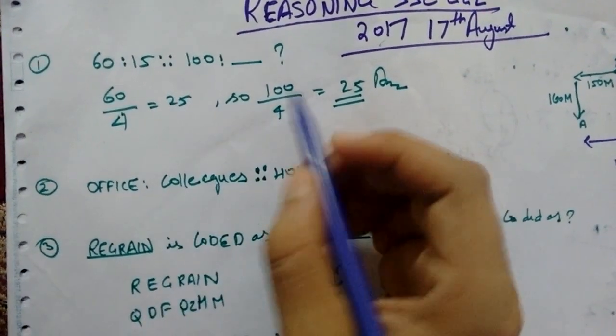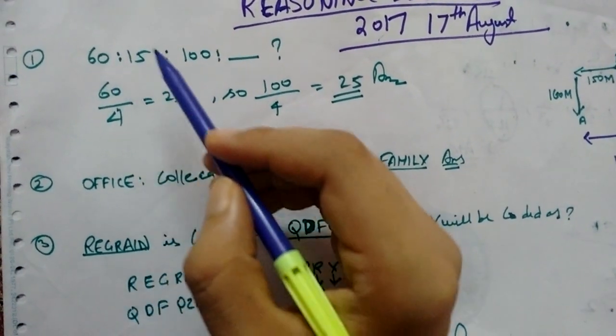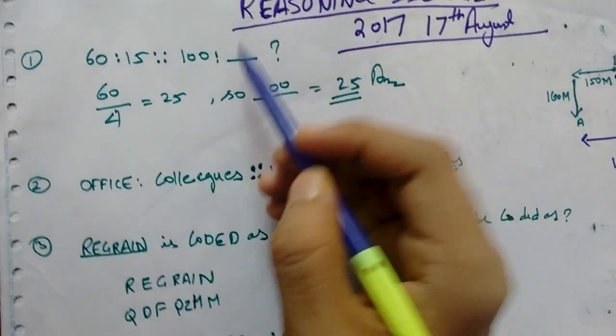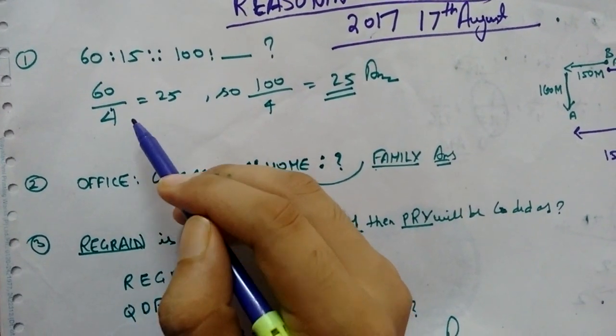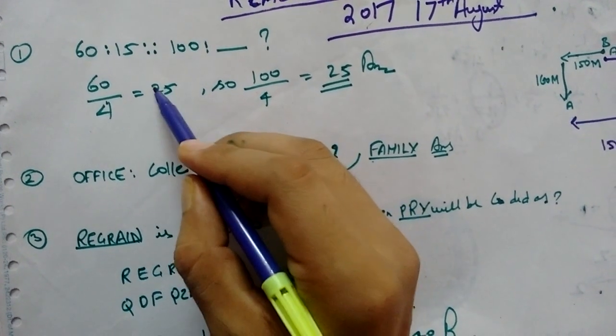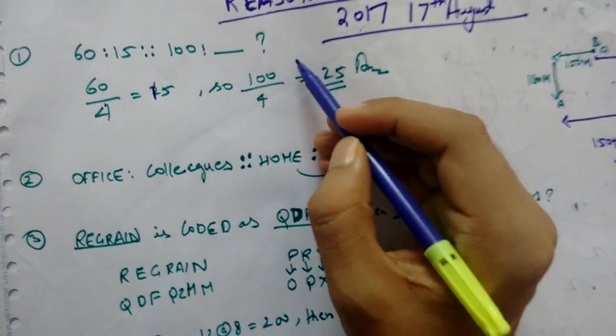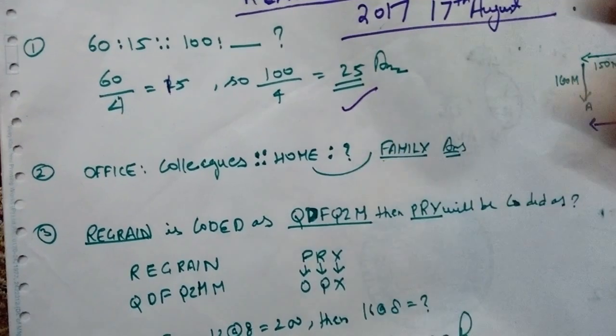I'm going to discuss the question in SSC CGL. 60 is to 15 equal to 100 question mark. 60 by 4 that is will give you value of 15, and 100 by 4 will give you 25.